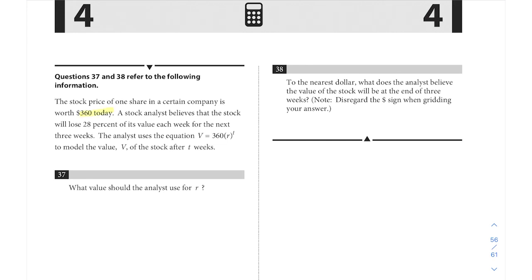Let's take a look. Questions 37 and 38 refer to the following information, as we so often see in our gridding questions towards the end of the calculator portion. The stock price of one share in a certain company is worth $360 today. A stock analyst believes that the stock will lose 28 percent of its value each week for the next three weeks. The analyst uses the equation V equals 360 r to the t to model the value V of the stock after t weeks.